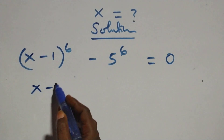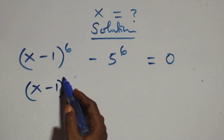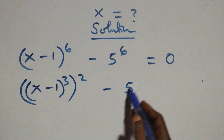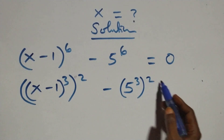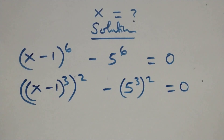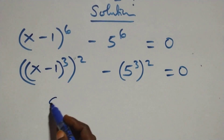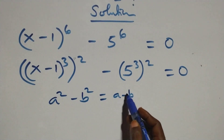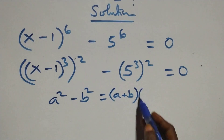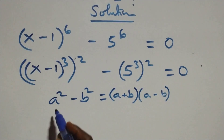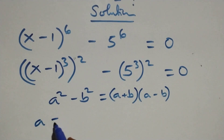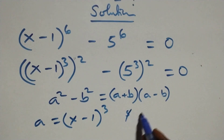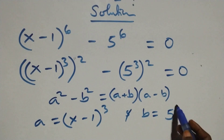We can write this as [(x−1)³]² minus [5³]², and this follows from a squared minus b squared, which is the same as (a+b)(a−b), where a stands as (x−1)³ and b stands as 5³.